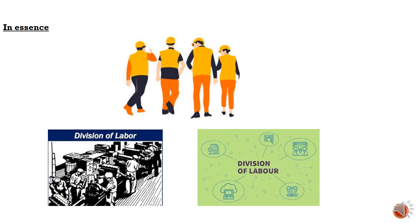In essence, Durkheim's concept of division of labor offers a comprehensive framework for understanding how societies maintain social order through the specialization and interdependence of individuals. It underscores the dynamic interplay between social structure, solidarity, and the organization of labor, which collectively shape collective life. By outlining the transition from mechanical solidarity in traditional societies to organic solidarity in modern ones, Durkheim illuminates the evolution of social cohesion and integration, and clarifies how division of labor influences the bonds that tie individuals together within a society.